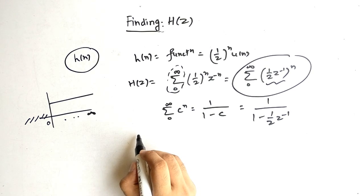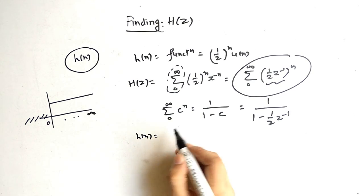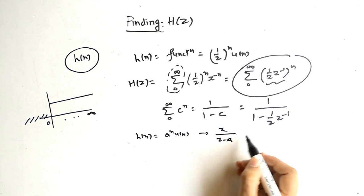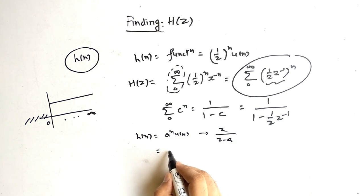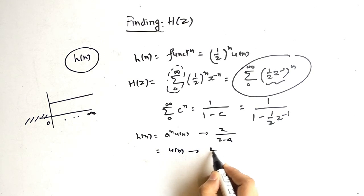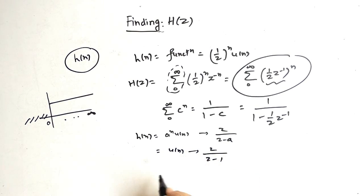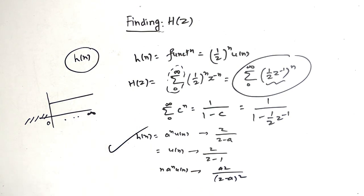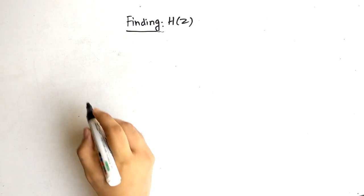So basically for H(n) = a^n u(n), the answer is z/(z-a). If H(n) = u(n), the answer is z/(z-1). If H(n) = n·a^n u(n), the answer is az/(z-a)^2. There are many such standard functions you should know so you can find the answer directly.